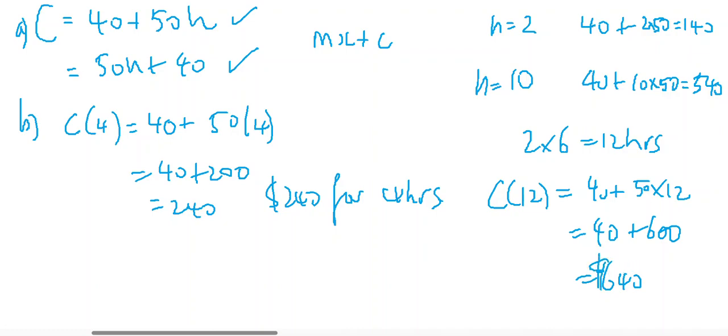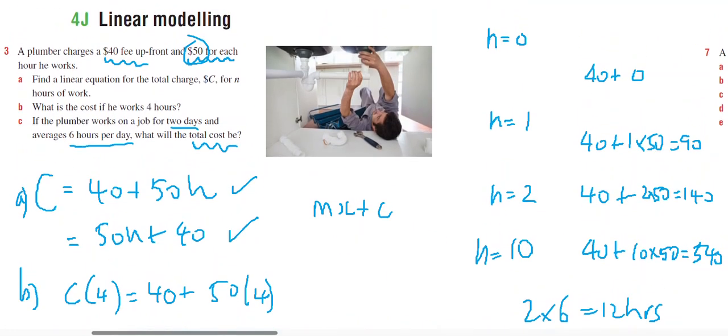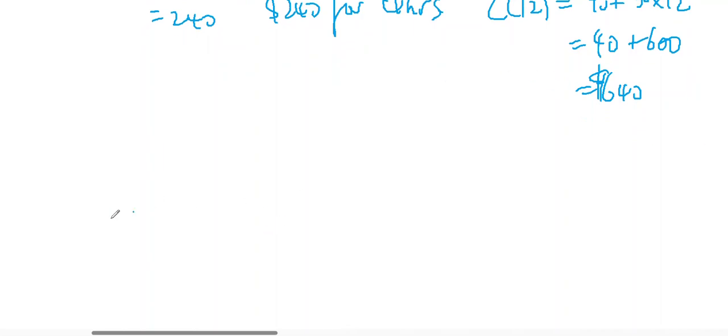Now on this occasion we weren't asked to draw a graph, but if we were asked to draw a graph, then the graph would look like this is going to be hours, this is going to be cost. We start at 40 and we go up with a gradient of 50. Therefore I know that if I'm working for 12, then my total cost is going to be $640.